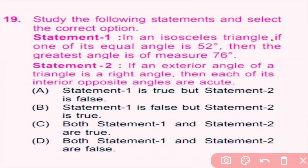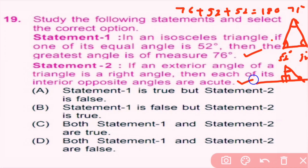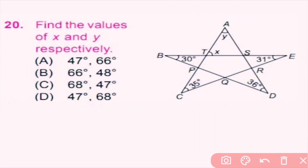Question 19. Statement 1: In an isosceles triangle, if one of the equal angles is 52°, then the greatest angle is 76°. Since 76 plus 52 plus 52 equals 180, this is correct. Statement 2: If an exterior angle of a triangle is a right angle, then each of its interior opposite angles are acute — since the two interior angles must together equal 90°, both are acute, so this is also true. Both statements are true, so C is the correct answer.